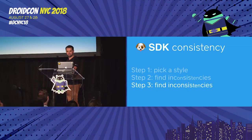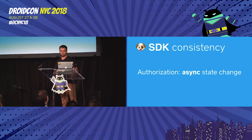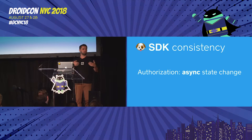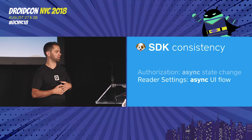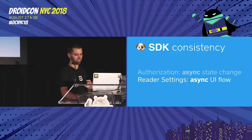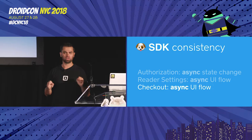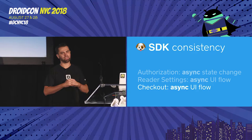Another aspect of SDK consistency: we had two entirely different ways to do async things. Authorization is an async state change — you call it, and when it succeeds you're logged in. But starting an activity and waiting for a result is also async. And same thing for checkout. So we had two entirely different async patterns, and that's kind of sad. I wanted one way, but Android does not make that easy.